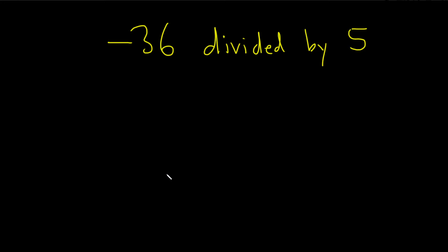Negative 36 divided by 5. In this problem we're being asked to use the division algorithm to find the quotient and the remainder. So this is our A and this is our B.